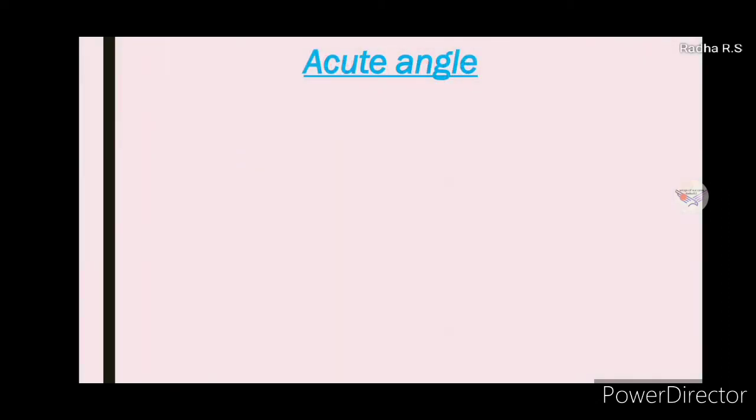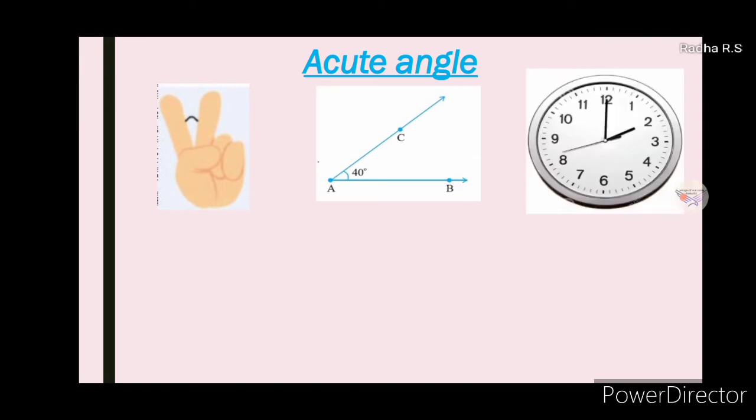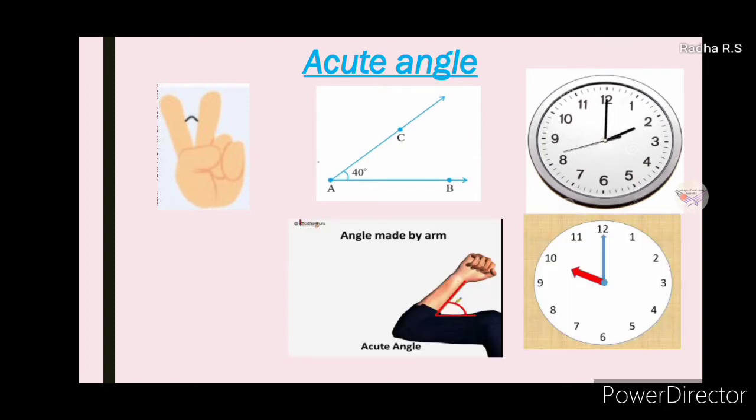Let's see some examples of acute angle. Our two fingers make an acute angle. This is 40 degrees of acute angle. Two hands of clock also make acute angle. Acute angle made by arm. A piece of pizza also shows acute angle.